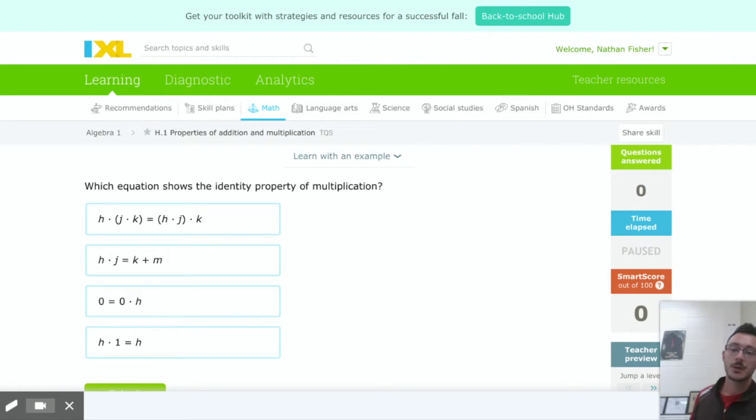Let's get started. This one asks which equation shows the identity property of multiplication. There's going to be three to four kind of overarching properties that we'll use for both addition and multiplication.